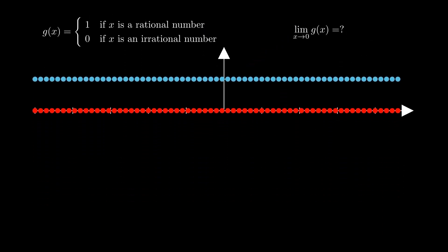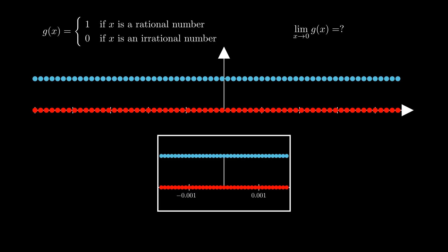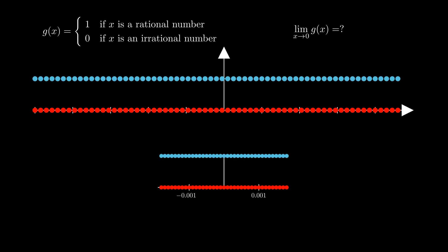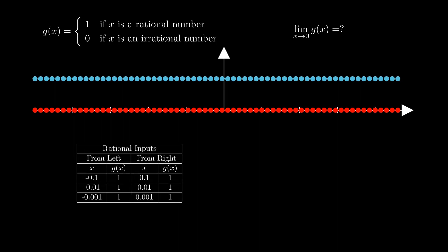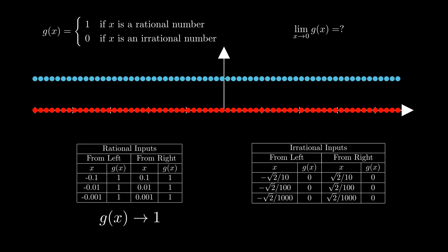Now that we have a grasp on what a limit is, let's try to use the tools we've developed to look at the limit of Dirichlet's function as x approaches 0. This function is very difficult to analyze graphically, as the density of rational and irrational numbers makes it hard to see what's going on around x equals 0. Even zoomed in around x equals 0, there are an infinite number of 0s and 1s for the function values. If we build a table of values from the left and right using some rational numbers, we see that the function values are all 1s, so they definitely approach 1. However, if we do the same with irrational numbers, we see that the function values are all 0s, so they approach 0 instead. Even approaching the input value from the left and right in different ways causes us to get different results. So, does this mean that the limit does not exist, or are we just missing something here?